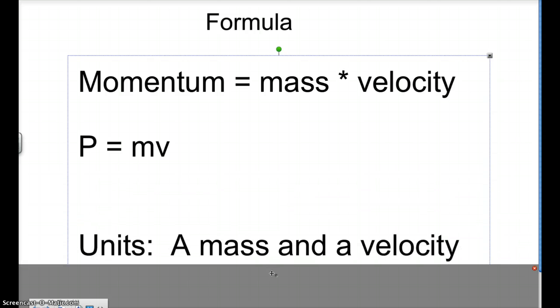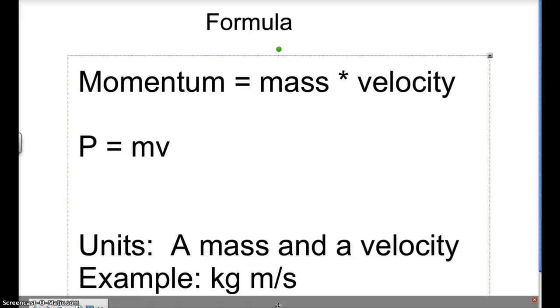As far as units, really the main unit you're going to use here is just a mass and a velocity together. So it kind of looks a little bit messy. An example would be kilogram meters per second, which I know is kind of a big unit. There's no exact unit for momentum. You're just going to combine mass and velocity. So it would be kilogram meters per second, gram meters per second, or something like that.